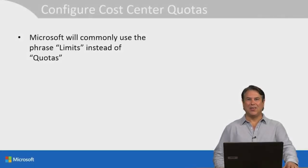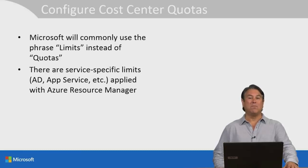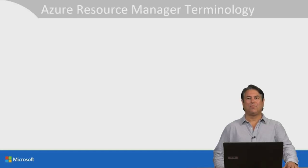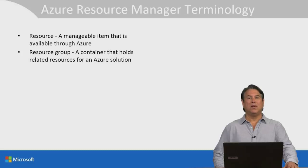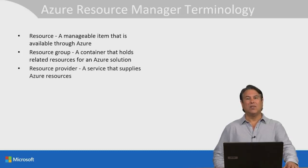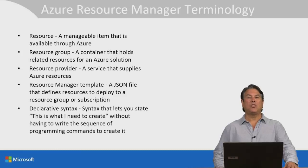In this lesson, we're going to look at cost center and tagging. Microsoft will commonly use the phrase 'limits' instead of 'quotas.' There are service-specific limits or quotas — for example, Active Directory, App Service, etc. — that are applied with ARM, Azure Resource Manager. Subscription limits can be applied when you use Azure Service Management or Azure Resource Manager. Let's define some terms. A resource is a manageable item available through Azure. A resource group is a logical container that holds related resources for an Azure solution. A resource provider is a service that supplies Azure resources.